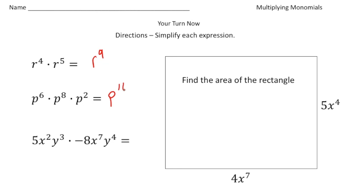Here we have 5x squared y cubed times negative 8x to the seventh y to the fourth. So five times negative eight will give you negative 40, and then x squared times x to the seventh would be x to the ninth, and then y cubed times y to the fourth would give you y to the seventh power.